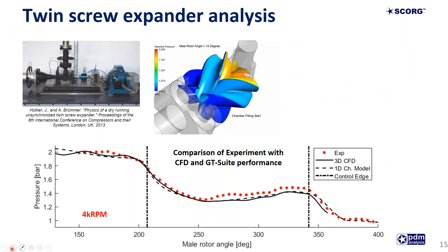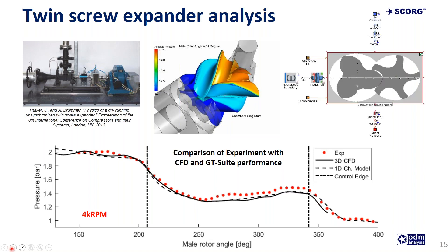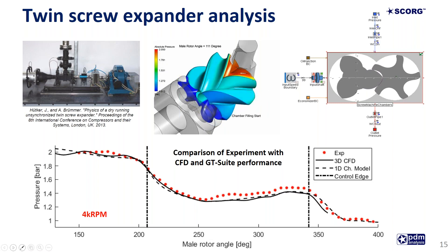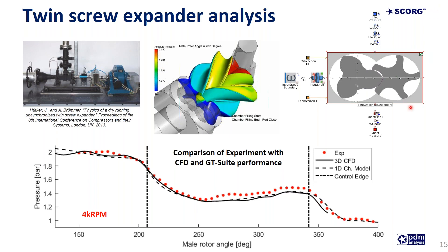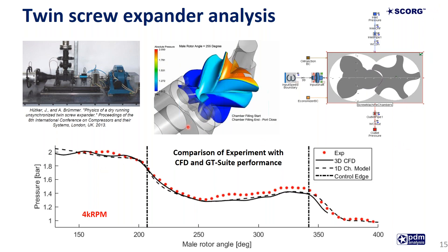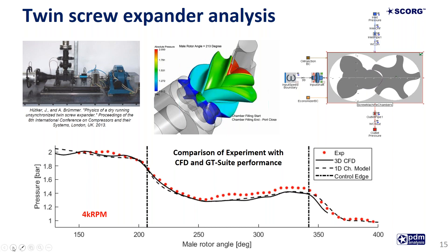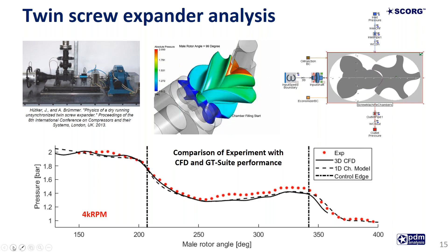Another case study was done on a twin screw expander. SCORG alongside GT Suite are capable of calculating the performance of expanders and their systems, such as an organic Rankine cycle with refrigerant or air as a working fluid. The results obtained using SCORG and the GT Suite 1D chamber model were compared with CFD analysis prepared with SCORG and ANSYS CFX solver, and with experimental data recorded at Dortmund University. Both simulations align very well with the measured data, demonstrating the versatility of SCORG for performance prediction and optimization of screw machines.